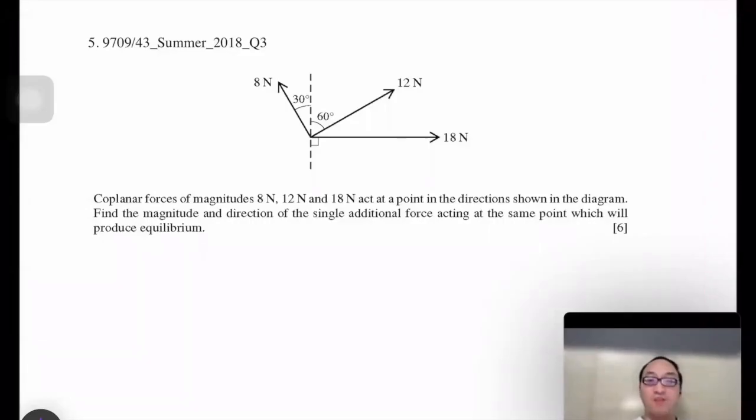Number 5 about force and equilibrium. Coplanar forces of magnitudes 8, 12, and 18 act at a point in the directions shown in the diagram. Find the magnitude and direction of the single additional force acting at the same point which will produce equilibrium.